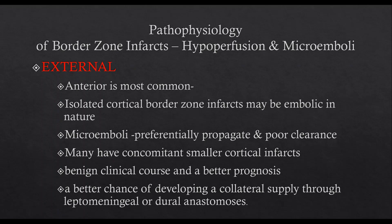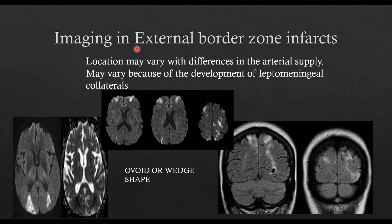Because of these collaterals, external cortical watershed infarcts generally have a benign clinical course and a better prognosis — the anterior type being the most common. On MR imaging, they are usually wedge-shaped or ovoid-shaped and are seen in typical locations, though they can vary because of the development of leptomeningeal collaterals.